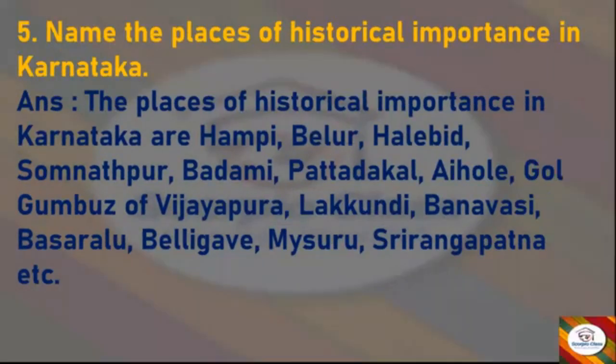Next: Name the places of historical importance in Karnataka. Answer: The places of historical importance in Karnataka are Hampi, Belur, Halebidu, Somanathpur, Badami, Pattadakal, Aihole, Gol Gumbaz of Vijayapura, Lakkundi, Banavasi, Basaralu, Belagavi, Mysuru, Shrirangapatna, etc. So these are some places of historical importance in Karnataka.